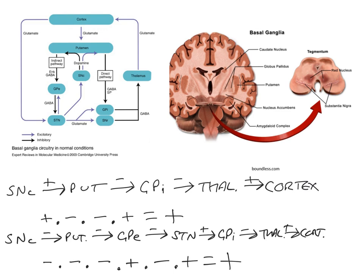As an exercise, try simulating different diseases of the basal ganglia — for example, removing the initial stimulation of the putamen by the pars compacta in the direct pathway, or removing the initial inhibition in the indirect pathway. When you work through it, you should find a net decrease in cortical excitation. I hope this slightly unconventional way of looking at the basal ganglia proves useful to you.